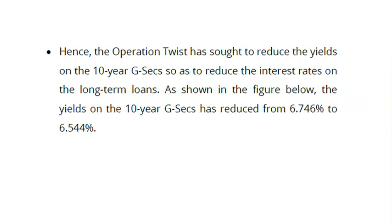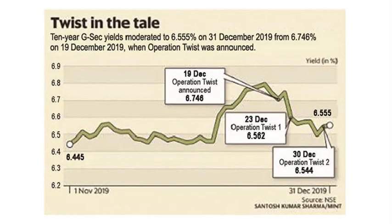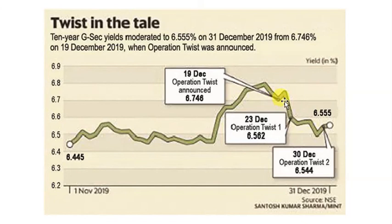Operation Twist sought to reduce yields on 10-year government securities to reduce long-term loan interest rates. As shown in the figure, yields on 10-year government securities reduced from 6.74% to 6.54% — a decrease of approximately 0.20%. From November 2019, there was a sharp decline, and after Operation Twist was introduced on December 19th, the yield rates also fell further, demonstrating that Operation Twist was an effective step in reducing long-term interest rates.